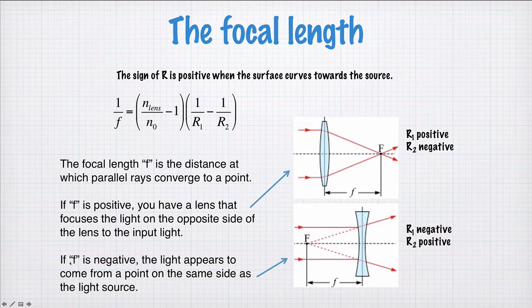In this case, we have f, the focal length is negative. And the light appears to come from a point on the same side as the light source. If your eye is over here, and you're looking at this scene, what you would perceive is light coming from a point source here at this focal length f.